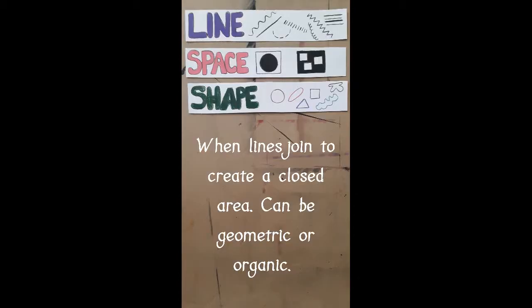Shapes are made when lines join to create a closed area. They can be both geometric and organic. Some examples of geometric shapes are squares, circles, triangles, and rectangles.